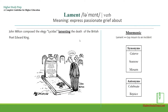The next word is lament, which is a verb, which means express passionate grief about. For example, John Milton composed the elegy Lycidas, lamenting the death of the British poet Edward King. The mnemonic for remembering the word lament can be 'lay mourn to an incident.' Some synonyms for the word lament can be grieve, sorrow, mourn, and some antonyms can be celebrate, rejoice.